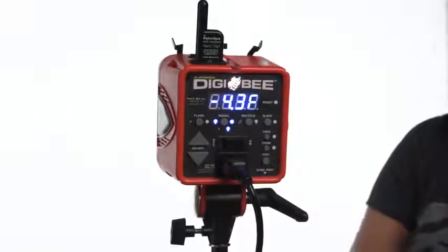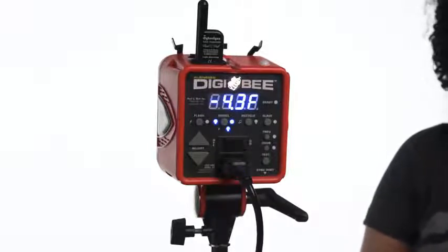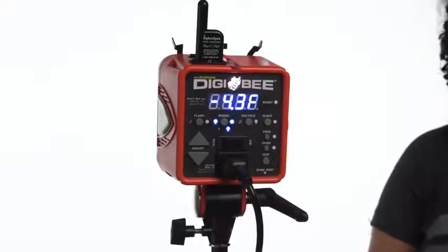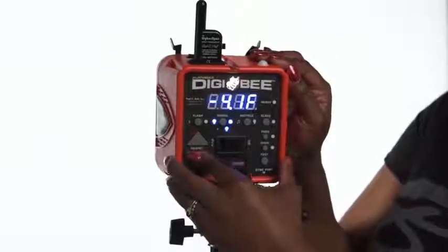When the bulb with the circular arrow is glowing blue, that means the Digibee's modeling lamp is set to model adjustment mode. Model adjustment mode just means you can adjust the model output of the Digibee independent of the flash output, using these up and down adjust buttons.